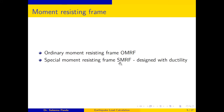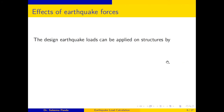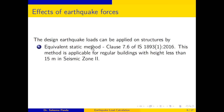This applies to moment resisting frames designed with ductility. Earthquake forces can be applied to a structure by two methods. The first is the Equivalent Static Method, given in clause 7.6 of IS 1893 Part 1 (2016). In this method, regular buildings with height less than 15 meters and located in seismic zone 2 are designed.